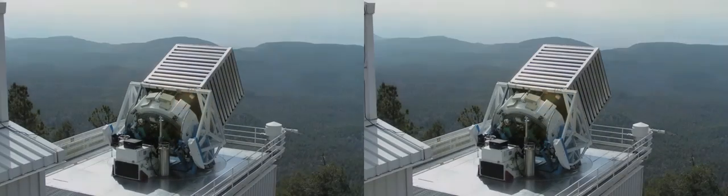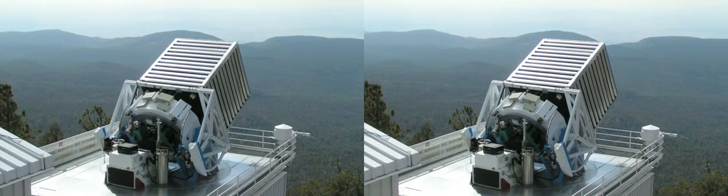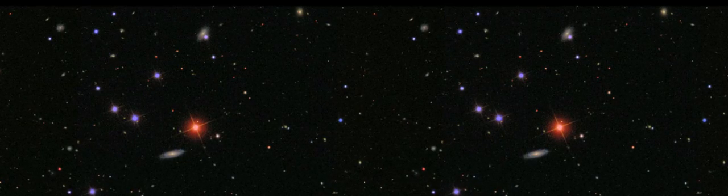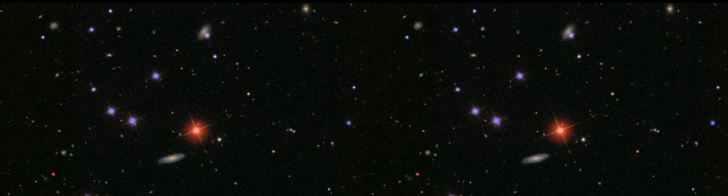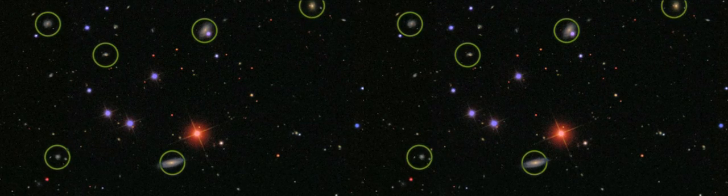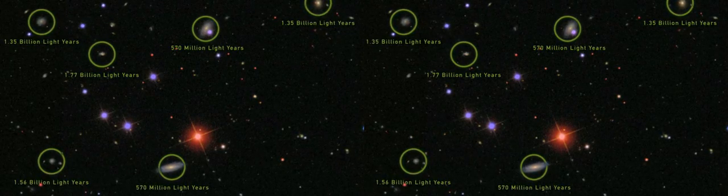What about the universe on larger scales? How do galaxies cluster together? To answer these questions, we'll turn to a different telescope. This 2.5-meter telescope in New Mexico was the site of a decade-long project to make a three-dimensional map of galaxies — the Sloan Digital Sky Survey. The survey consists of two parts: a first pass to image the sky and identify the galaxies, and a second pass to carefully study the light from these galaxies in order to determine their distance. Measuring the distance to nearly one million galaxies results in a 3D map of the structure of our universe.